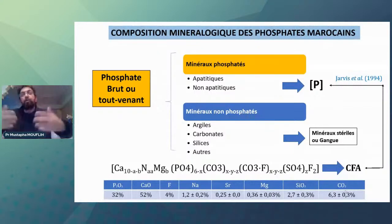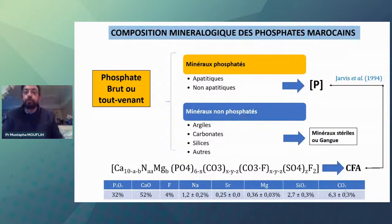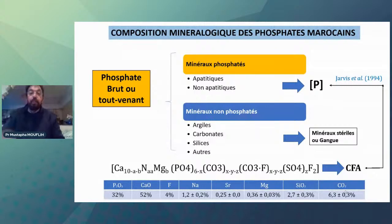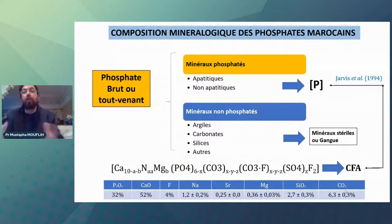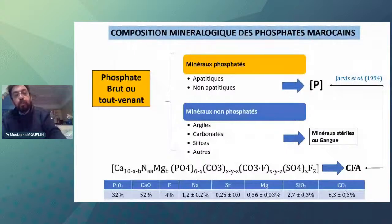Dans les phosphates marocains, la phase phosphatée est une carbonate fluorapatite, aussi appelée francolite. La formule générale de cette carbonate fluorapatite comporte du calcium, du magnésium, du phosphore, du carbonate, des sulfates, etc. En termes de teneurs : 32% à 52,4% en P2O5 pour une apatite pure. Pour mieux exploiter et rentabiliser un phosphate, il faut comprendre la structure de cette apatite.